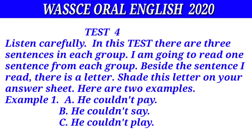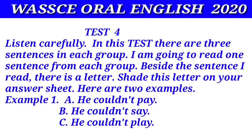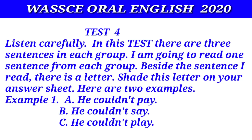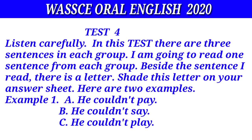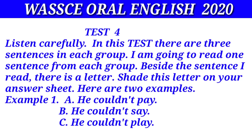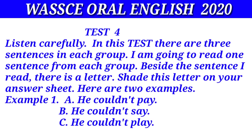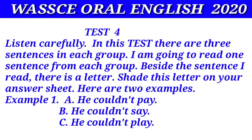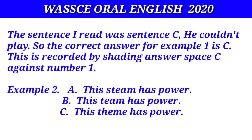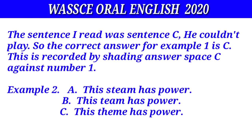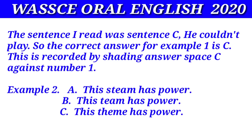Test four. Listen carefully. In this test there are three sentences in each group. I'm going to read one sentence from each group. Beside the sentence I read there is a letter. Shade this letter on your answer sheet. Here are two examples. Example one: he couldn't play. The sentence I read was sentence C, he couldn't play. So the correct answer for example one is C. This is recorded by shading answer space C against number one.